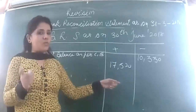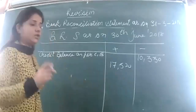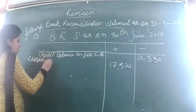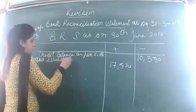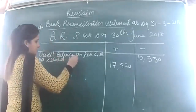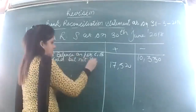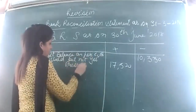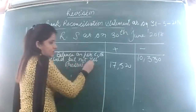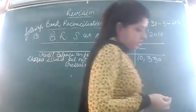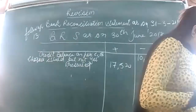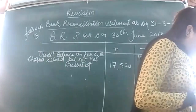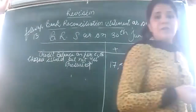Rupees 350 was deposited into the bank, and the bank wrongly debited instead of crediting — so bank's balance is reduced. When you deposit into bank, the bank should credit your balance. Instead, the bank debited — meaning the bank showed a withdrawal. Write: wrongly debited by bank.